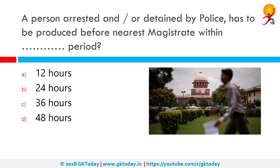A person arrested and/or detained by police has to be produced before the nearest magistrate within what period? Article 22 makes the minimal procedural requirement which must be included in any law enacted by the legislature under which a person is deprived of his personal liberty. Article 22(1) and (2) are also called rights of an arrested person. A person cannot be arrested and detained without being informed why he is being arrested. A person who is arrested cannot be denied the right to be defended by a legal practitioner of his choice. Every person who has been arrested will be produced before the nearest magistrate within 24 hours, and the custody of a detained person cannot extend beyond that period without the authority of a magistrate.